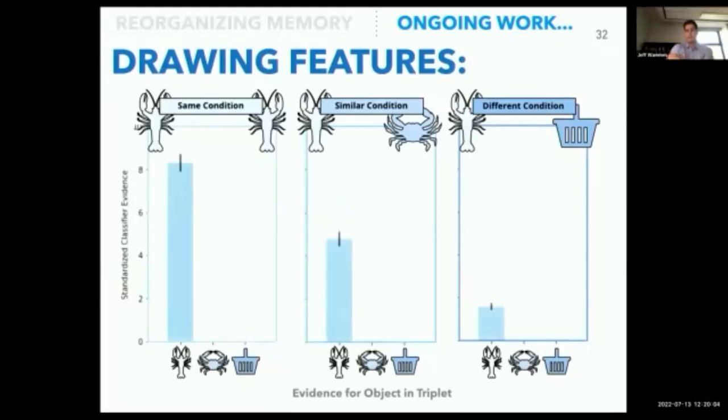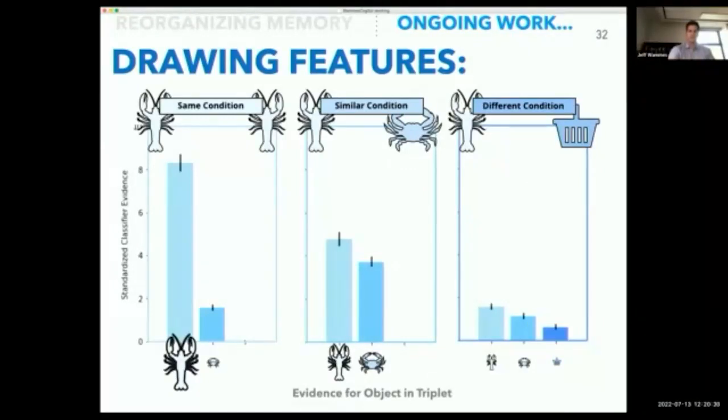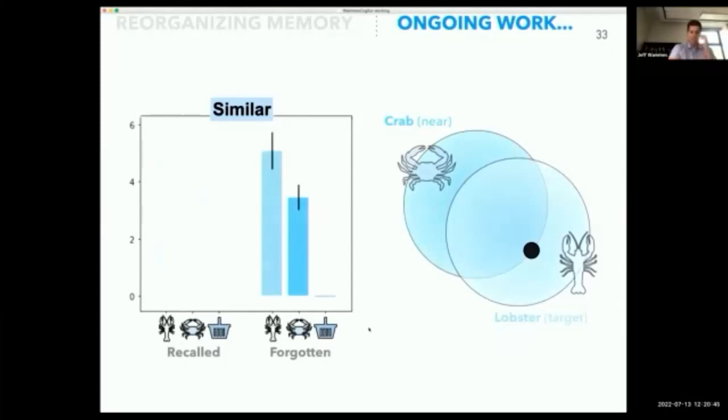So first we'll look at the manipulation. We see that the evidence for the target category is highest in the same condition and then tapers off. If we look at the evidence for the nearest competitor, it's highest in the similar condition where that's what the model's trying to draw. And the different object doesn't come up at all except for in the different condition, and you can see how all these bars are lower. So essentially this is producing an incoherent drawing, this is producing something that's nicely balanced between the two, and this is totally dominated by the target. Not all that surprising—that's kind of what we designed things to do.